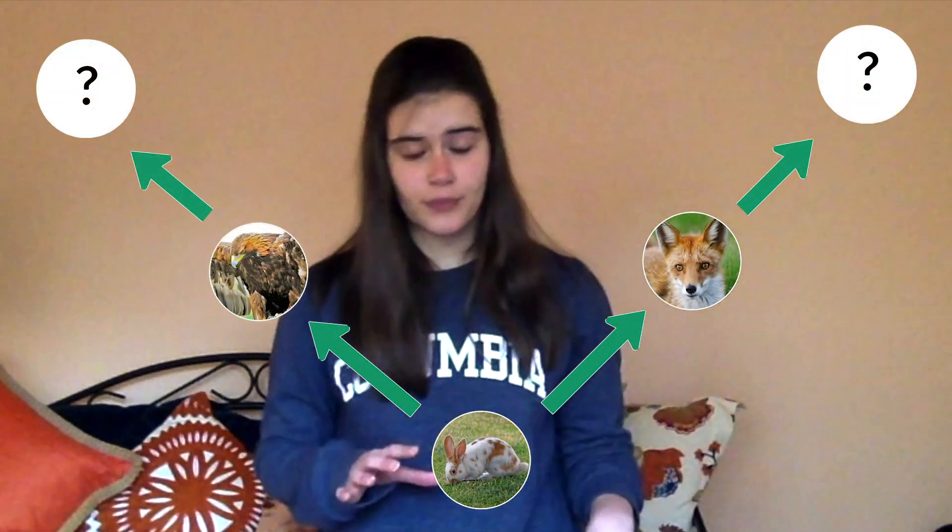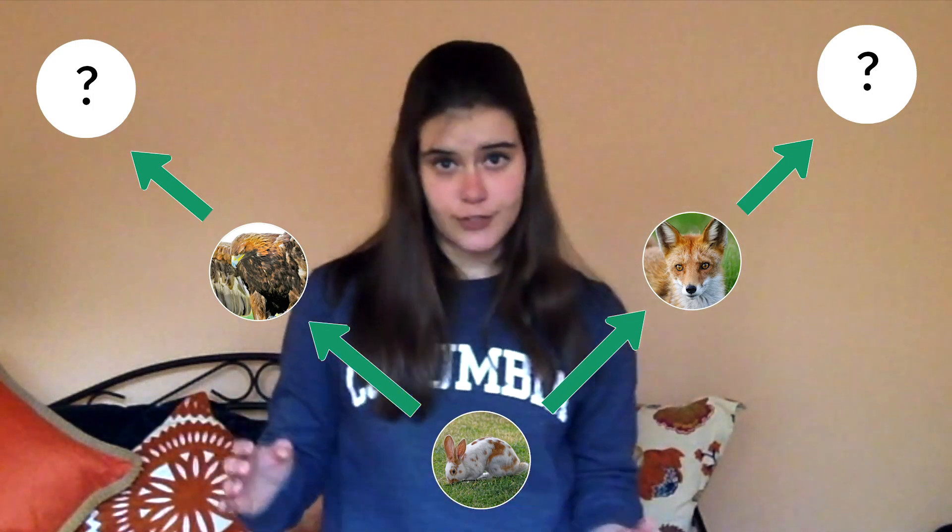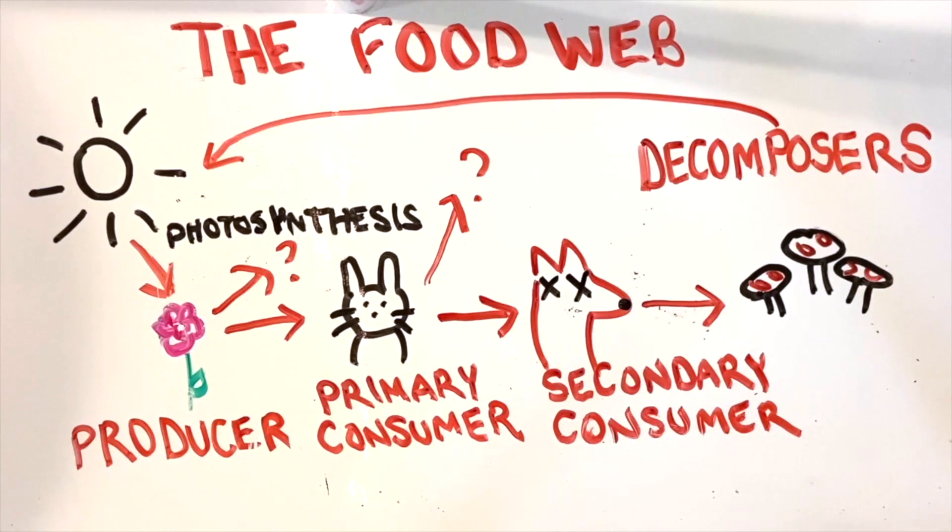Alright everyone, let's review what we learned today. First, we learned that predators are animals that eat other animals, and prey are animals that get eaten by other animals. We learned about food chains and food webs, and that a food web illustrates the ways that different animals and plants interact in an ecosystem, and that predators and prey are part of those food webs. We also learned about energy transfer — that at each level of a food web, there's going to be a transfer of energy between the organisms.